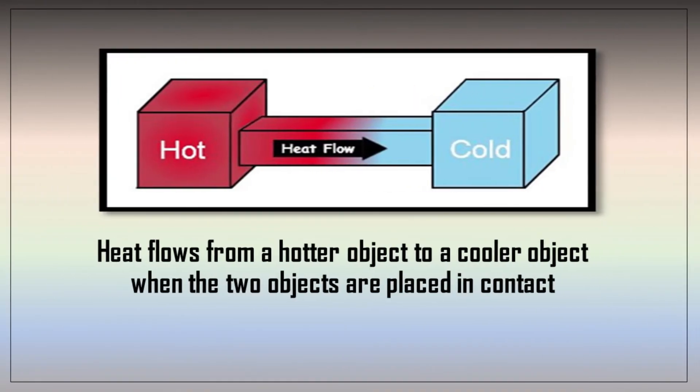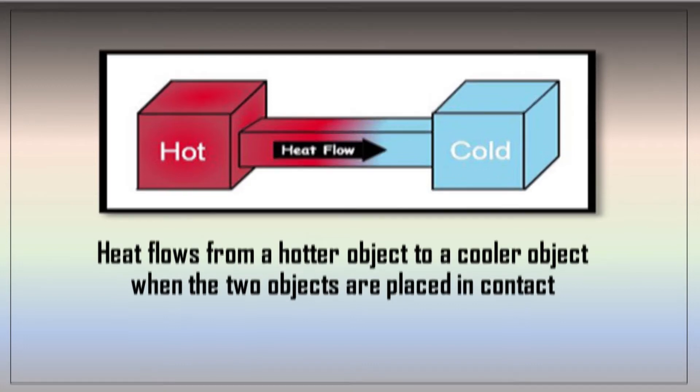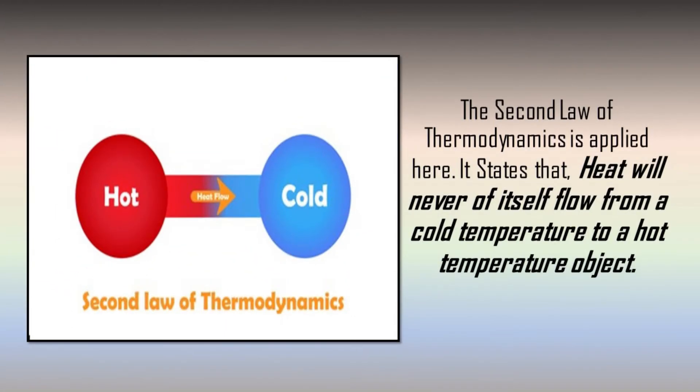In a natural process, like our examples a while ago, heat flows from a hotter object to a cooler object when the two objects are placed in contact. It follows the second law of thermodynamics, which states that heat will never of itself flow from a cold temperature to a hot temperature object.